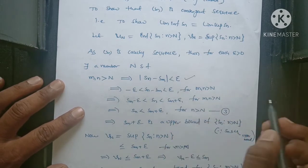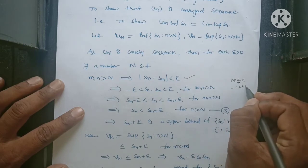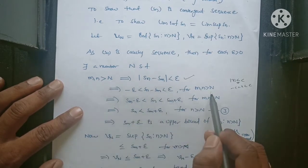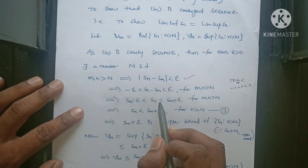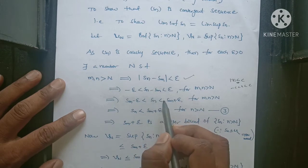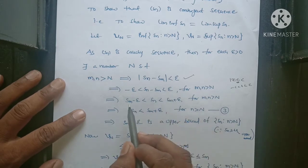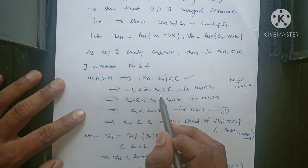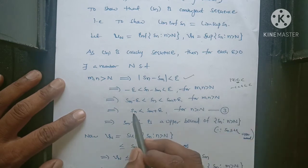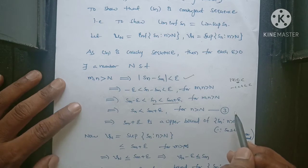Now, using mod(x) less than c means minus c less than x less than plus c. For this scenario: minus epsilon less than Sn minus Sm less than epsilon, for M, N both greater than capital N. Adding Sm on both sides: Sm minus epsilon less than Sn less than Sm plus epsilon. So Sn is less than Sm plus epsilon for n greater than capital N. This is equation 3.